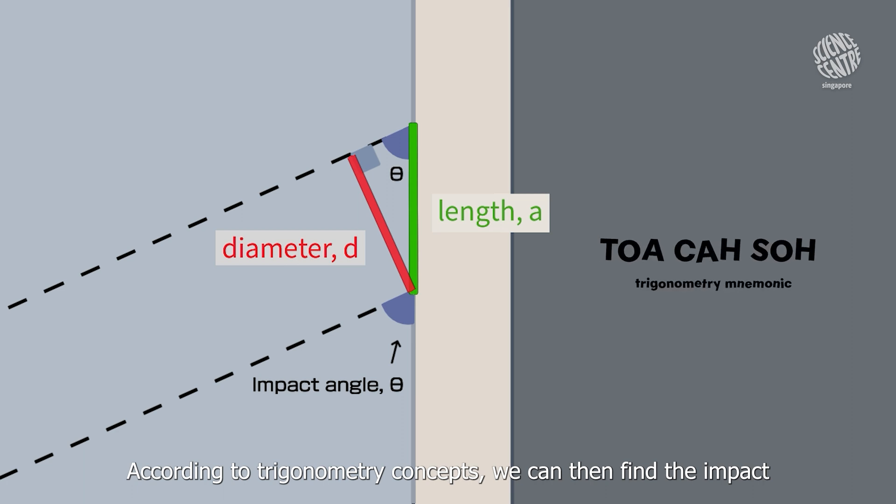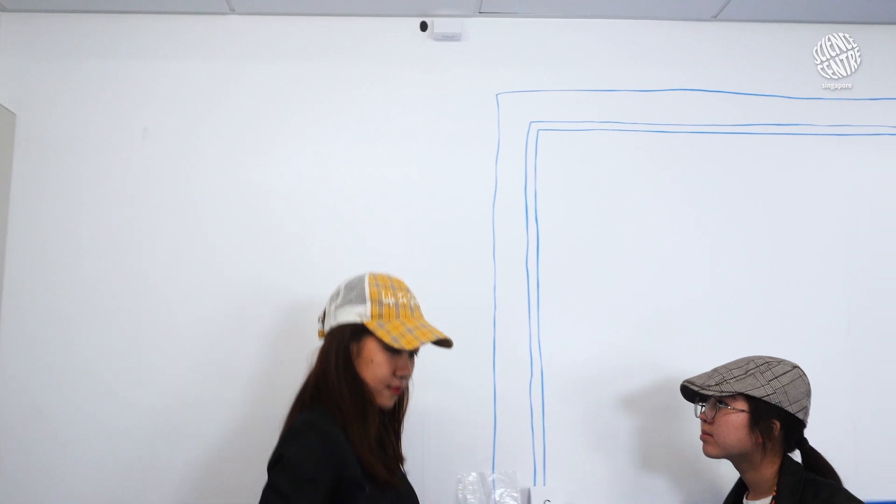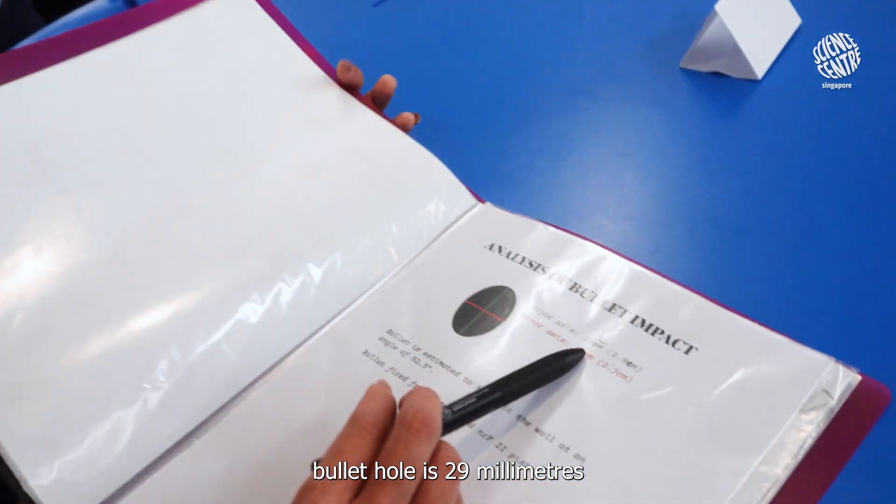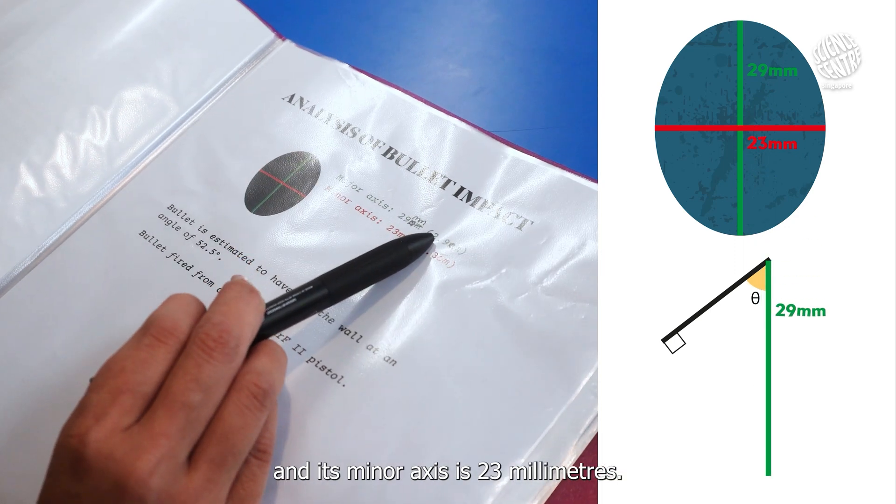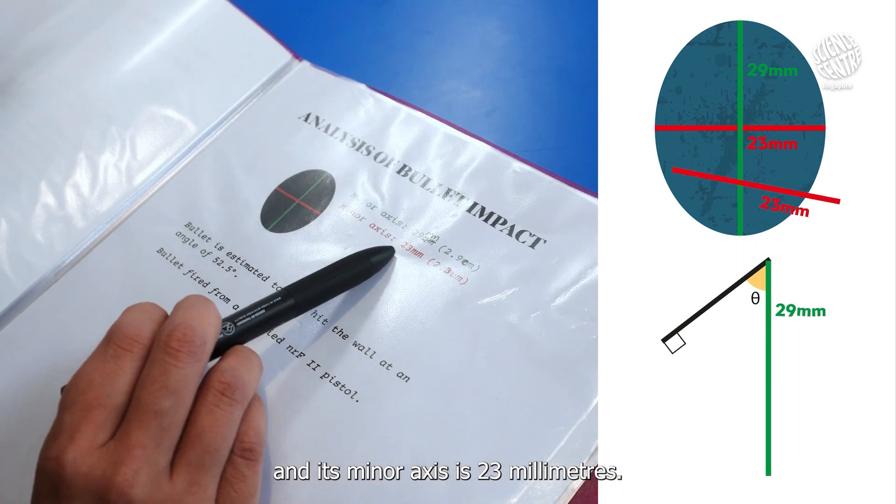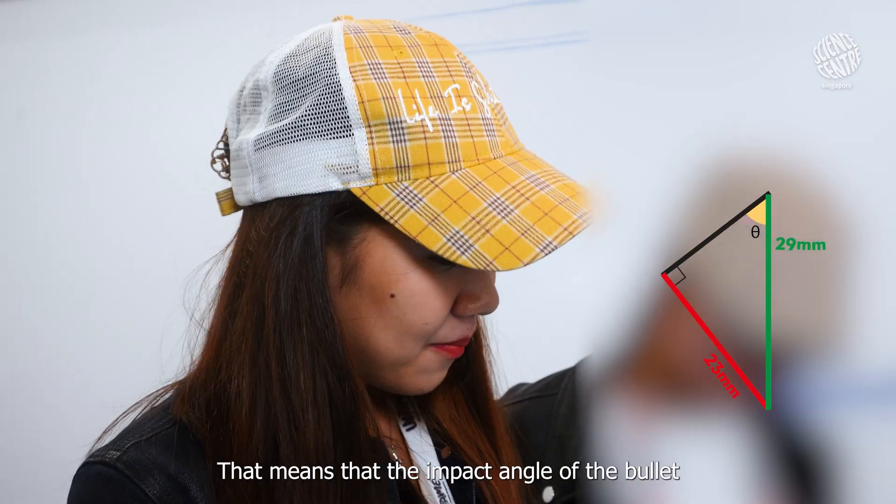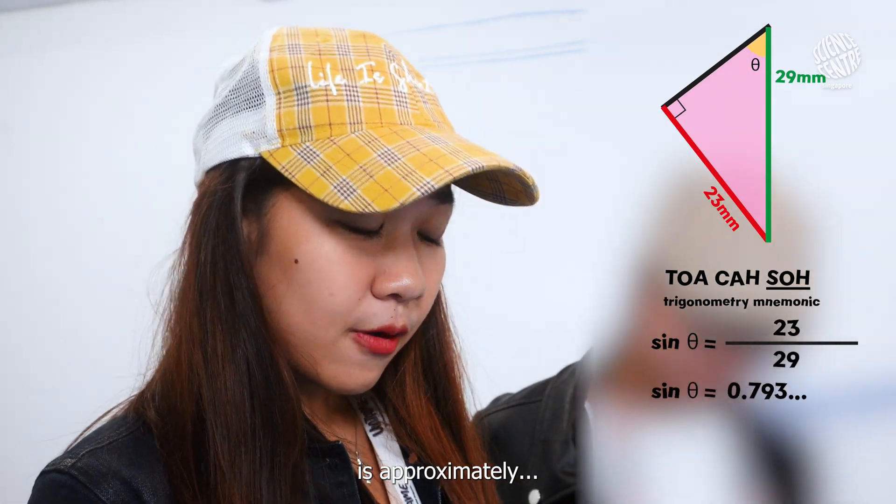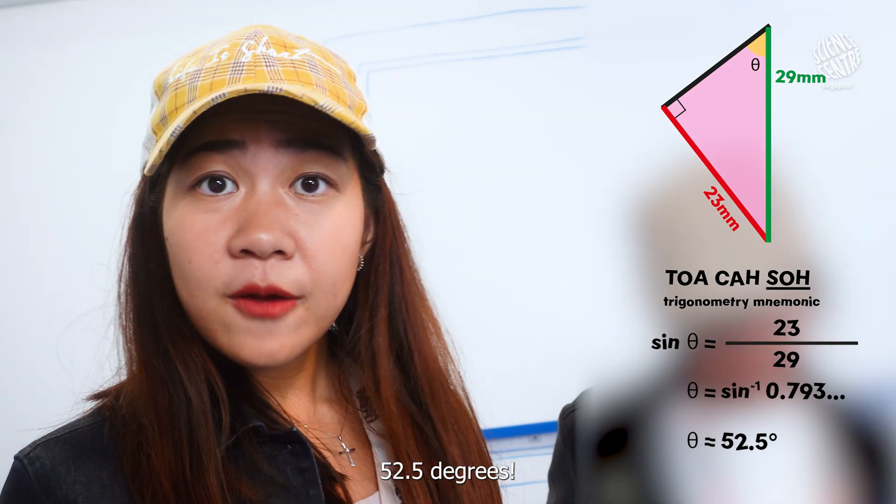According to trigonometry concepts, we can then find the impact angle using the sine ratio. The major axis of this bullet hole is 29 mm, and its minor axis is 23 mm. That means that the impact angle of the bullet is approximately 52.5 degrees.